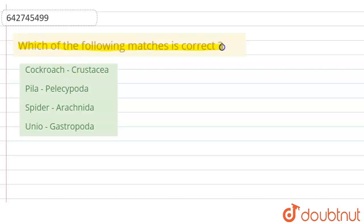...of the following matches is correct? Cockroach to Crustacea, Pila to Pelecypoda, Spider to Arachnida, and Unio to Gastropoda. Let's see the answer now.